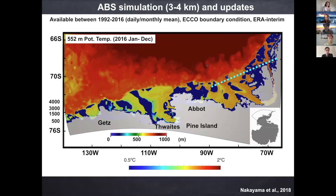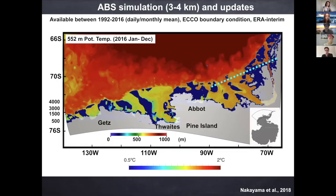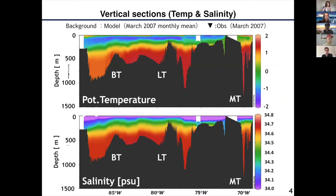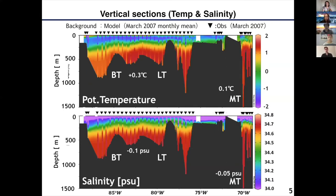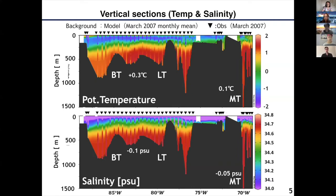Looking at a vertical section, there are a few different troughs — the DT and LT, and another trough important for carrying warm, salty circumpolar deep water towards the actual cavities. In the vertical section, we have warm water sitting at depth, and at shallow depth there's cold winter water. We are able to simulate warm water intrusion towards actual cavities. Comparing the March 2007 monthly mean for the model against observations taken in March 2007, although there are some biases for different sections, we are able to simulate circumpolar deep water intrusion quite well, consistent with observations.